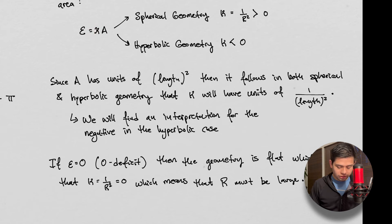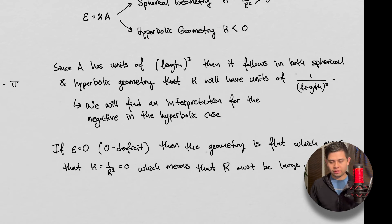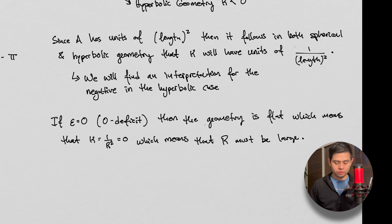So this guy here is going to have units of one. This is going to be essentially unitless. And we divide both sides by A, we get this one over length squared. And we're going to find later an interpretation for this in the case of hyperbolic geometry, because you might think, hyperbolas don't have a radius. That's kind of weird to think about. But we'll see later how we can interpret this.